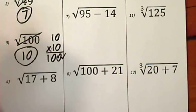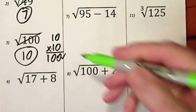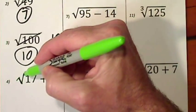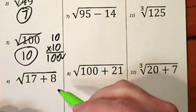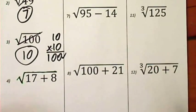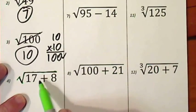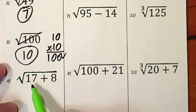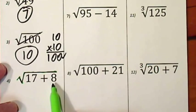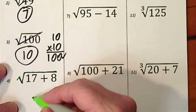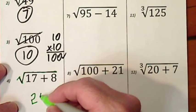The radical symbol is also considered a grouping symbol. So this symbol groups together everything that's underneath it. Remember order of operations, you address grouping symbols first. So I can add the 17 and the 8, that would give me 25.